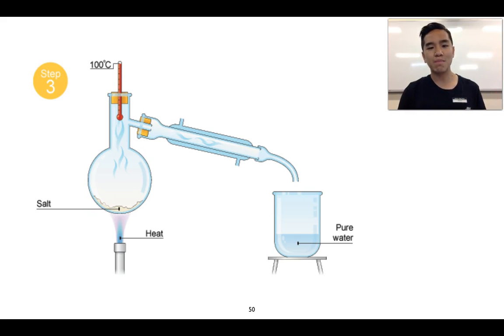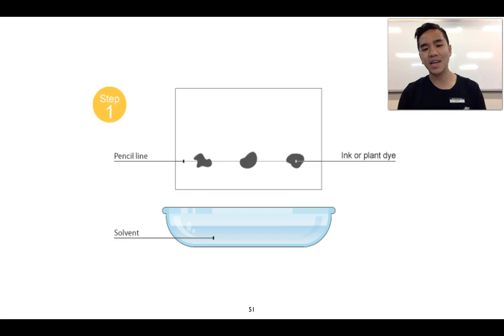The last technique involves separating components of mixtures that can be pigments or dyes from one another. We might have some different inks or plant dyes which could be made up of a range of different components. At the moment we can see there are three different components spotted on this sheet. This is commonly known as chromatography paper, and we can actually use something like filter paper as well. What we're going to do is dip it into a solvent, and the solvent will rise through and travel through the chromatography paper by a process called capillary action.